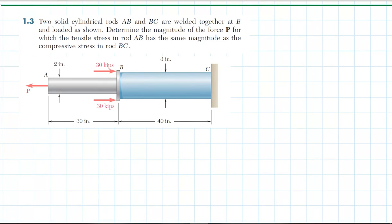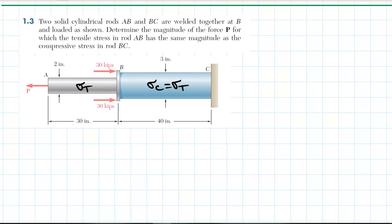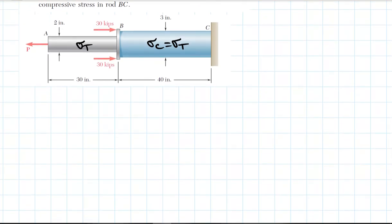Problem 1.3 again involves two solid cylindrical rods AB and BC welded together at B. We need to determine the magnitude of force B for which the tensile stress in rod AB has the same magnitude as the compressive stress in rod BC. We'll draw a free body diagram for each rod.